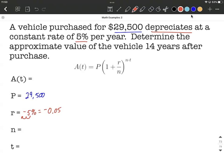Finally, we want to fill in n. n is the number of times this happens per year. So in our case, it depreciates 5% each year, meaning that it's going to be 5% less value in our car year after year after year. So that's going to happen once per year. So n is going to be 1.